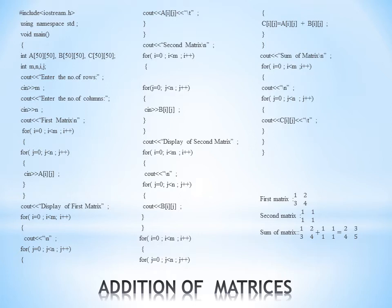For the first matrix the values are 1, 2, 3, and 4, and the second matrix contains 1, 1, 1, and 1. Now we add the two matrices: C[i][j] = A[i][j] + B[i][j]. It's like adding two numbers — the first row of the first matrix is added to the first row of the second matrix, and the second row of the first matrix is added to the second row of the second matrix.